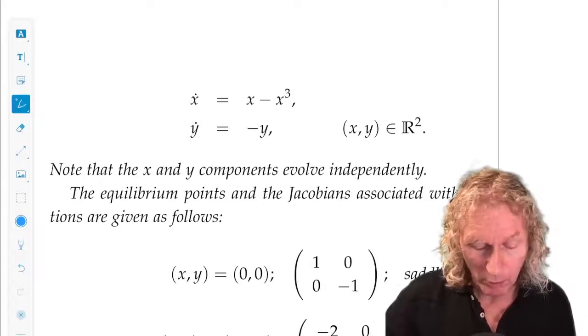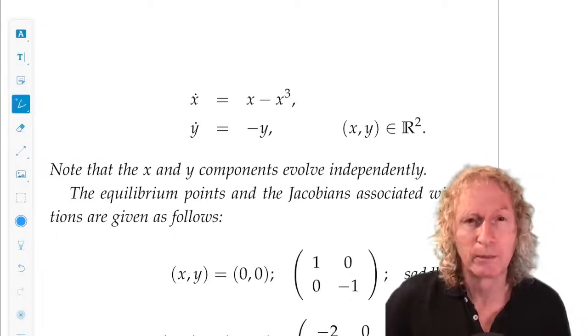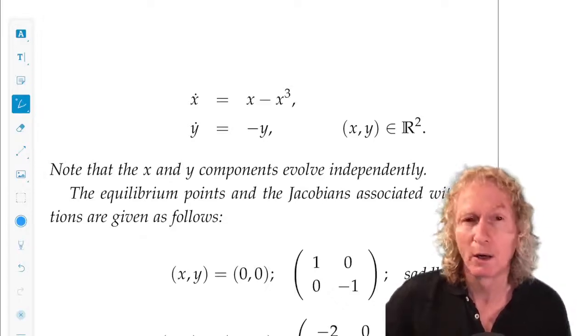x equals zero, or plus or minus one implies that x dot equals zero. So the vertical lines through x equals zero and x equals plus or minus one are invariant manifolds.